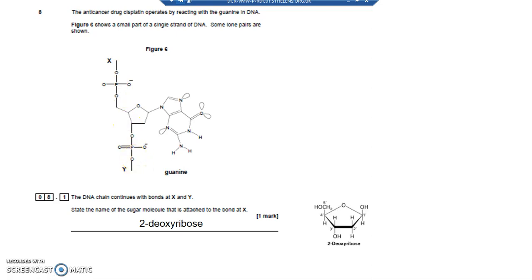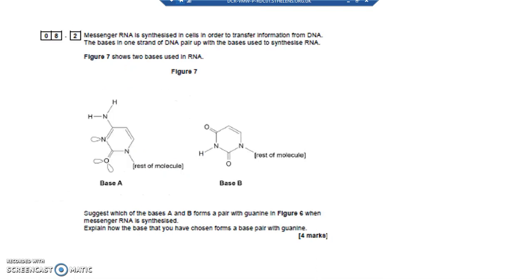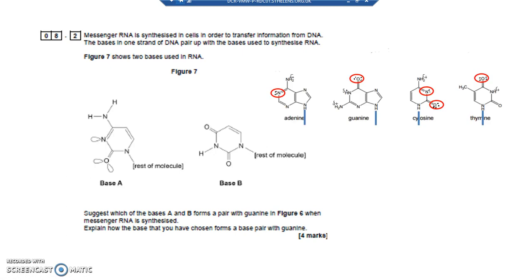How do you remember which bases bond where? The simple way is to look in your data book. In your data book that you have with you in your exam, you'll have all of the bases: adenine, guanine, cytosine, and thymine. Your first job is to put a lone pair of electrons on any single N ends and any O atoms.